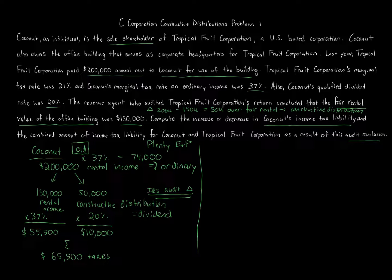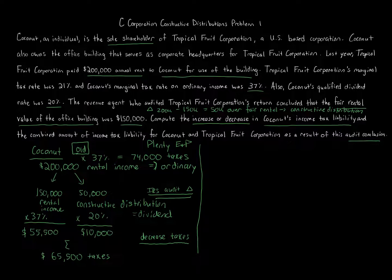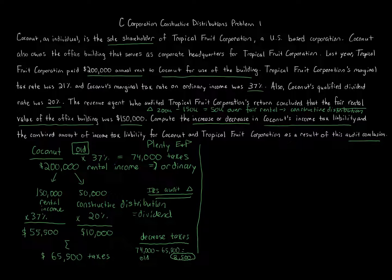As you can see, the IRS change is actually looking better for Coconut. Under the old result, before the IRS change, $74,000 of taxes had to be paid. Now Coconut only has to pay $65,500. So we know it's going to be a decrease. The decrease in taxes for Coconut: $74,000 minus $65,500 equals $8,500 — a decrease in taxes of $8,500. But we're not done, because we have to consider not only Coconut's income tax liability change but the combined effect as well.